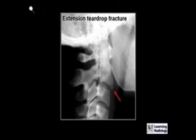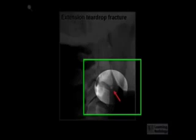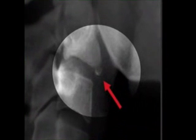This is an extension teardrop fracture, which can sometimes be the only clue to the presence of a hangman's fracture. The red arrow is pointing to a small avulsion-type fracture from the anterior inferior aspect of the body of C2.